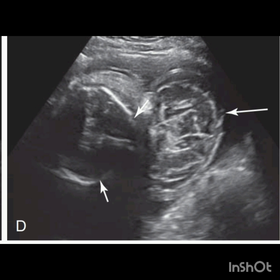This is the image of the head of the same fetus at 31 weeks gestation. You can see a large amount of herniated brain tissue indicated by the long arrow and a large calvarial defect indicated by the two short arrows.